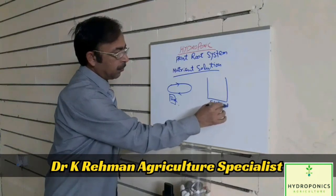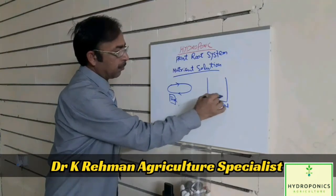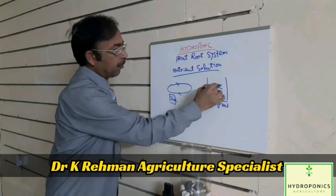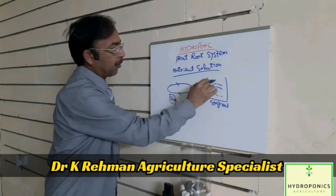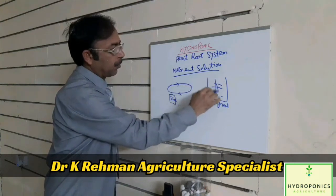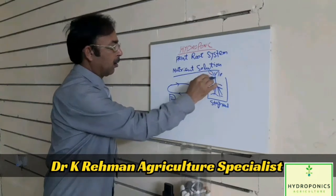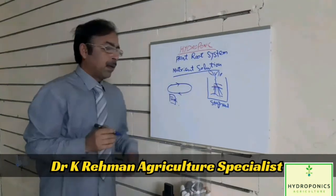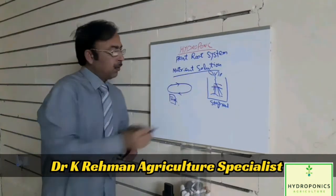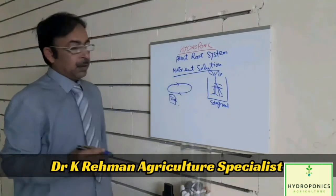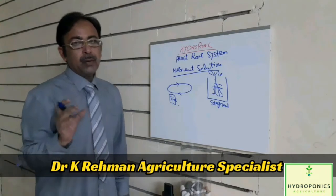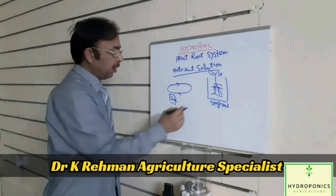Mostly, if we look at the system, there are two types basically in the hydroponic system: one with stagnant water and one with the reverse circulation of nutrients.